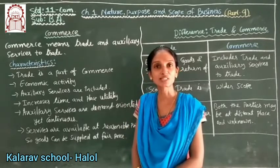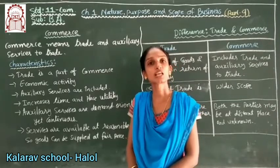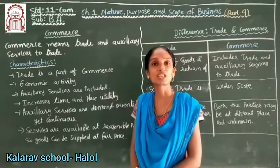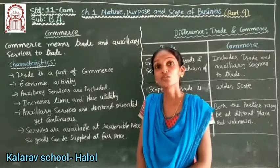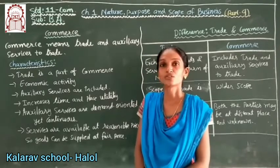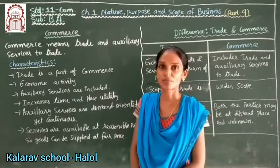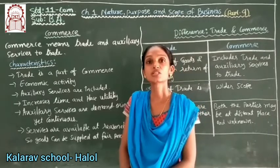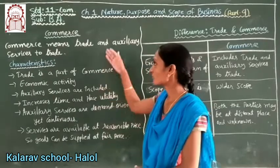Transportation includes roadways, railways, and airways — these are auxiliary services. Then there is insurance, which covers risk when goods move to another area. There is also warehousing: goods that have been sent and received need to be stored temporarily in a godown until they are needed. These are all auxiliary services to trade.